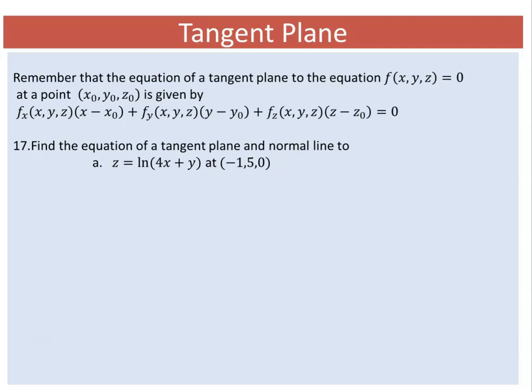The equation is z = ln(4x + y). For the function, we can rearrange it as ln(4x + y) - z = 0. Let me take the function as f(x, y, z) = ln(4x + y) - z. Now we need the partial derivatives of f with respect to x, with respect to y, and with respect to z.